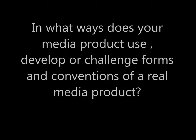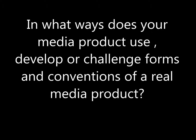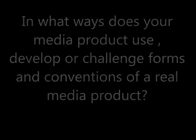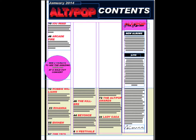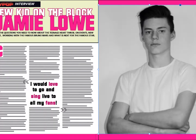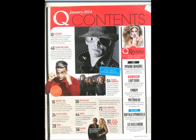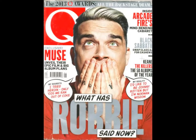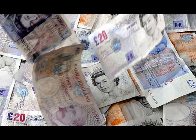In what ways does your media product use, develop or challenge forms and conventions of a real media product? My magazine consists of three magazine pages, each of which I have created to represent a genre. The genre of my magazine is indie pop, so for a magazine to follow the generic conventions of a real magazine, I have chosen to pastiche a real Q magazine. This allowed me to create a preferred reading of 16 to 24 year old females with a disposable income, so they can afford to buy the magazine. The advantages of having a magazine to pastiche helped me to follow the real life codes and conventions of a magazine.